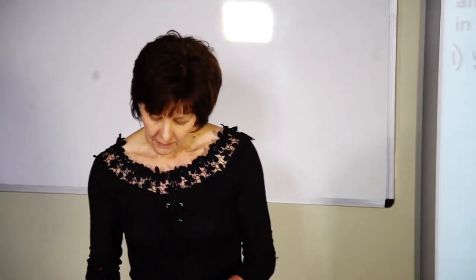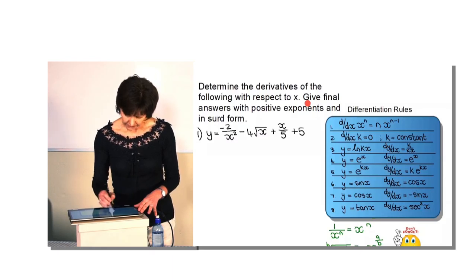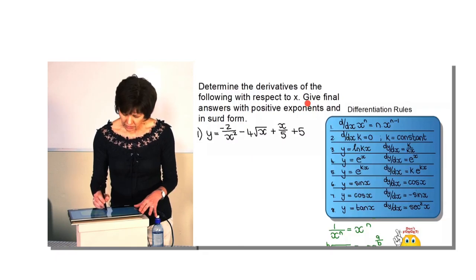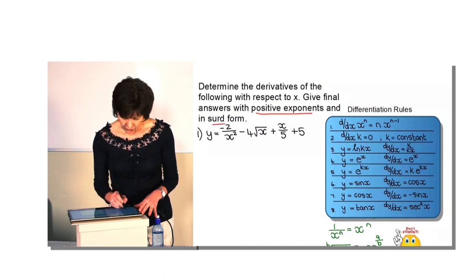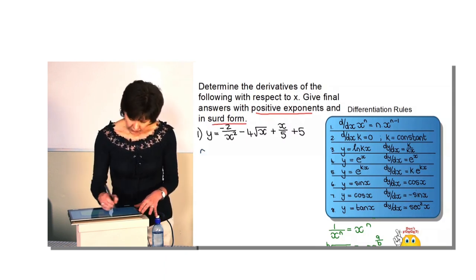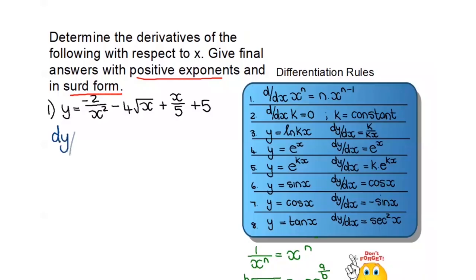The first example: determine the derivative of the following with respect to x. It's important to see that they also instruct me to give the final answers with positive exponents and also in surd form. If I look at this first example and I want to differentiate, I will run into a problem because the first term has x to the power 2 in the denominator, but the rule says I must have x to the power n in the numerator. So I'll have to change this first.